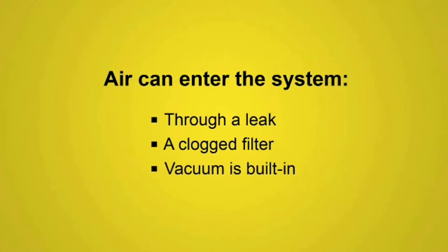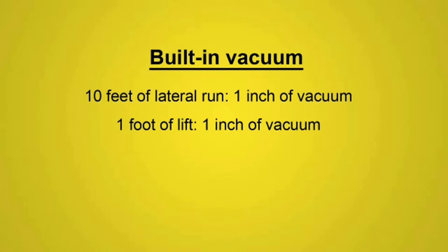Another way is when the system is built. Vacuum is inherently built into the system. For every ten feet of lateral run, you have an inch of vacuum. For every foot of lift, you have an inch of vacuum. For every fitting or device, you have an inch of vacuum. All this could add up to five or six inches of vacuum easily.